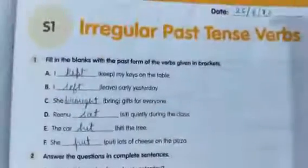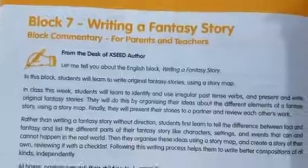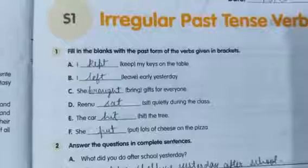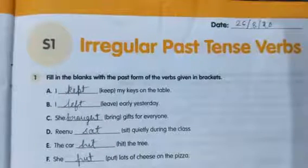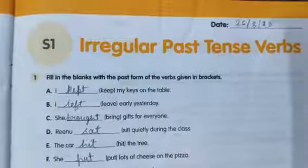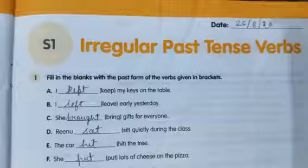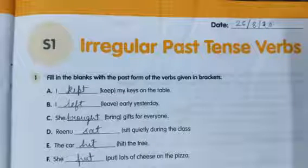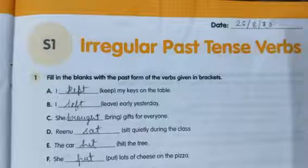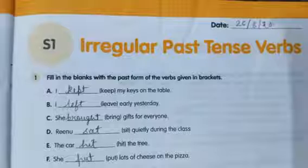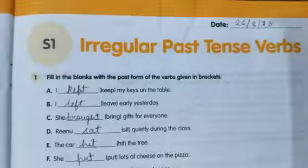Good morning, students. Today we will continue with Block 7. For this you have to take out your workbook, page number 41. It is S1: Irregular past tense verbs. We have seen regular past tense verbs in which we add 'ed'. Today we will see irregular past tense verbs.